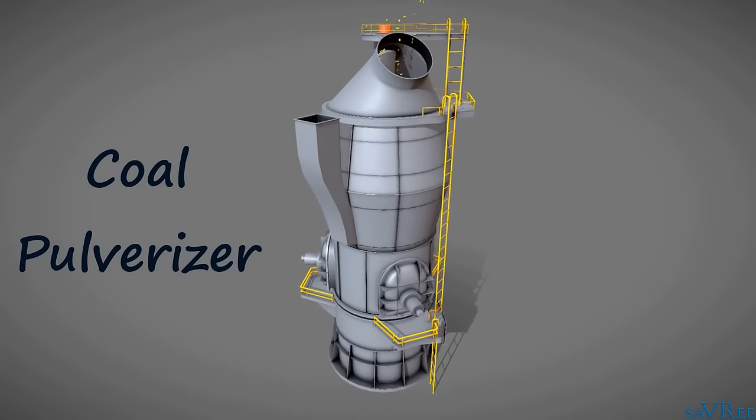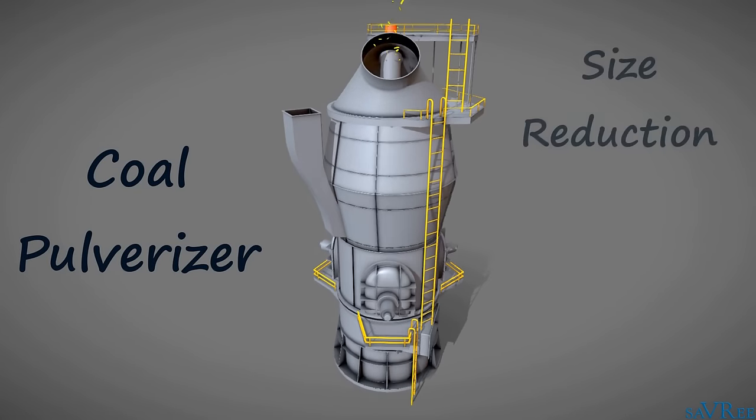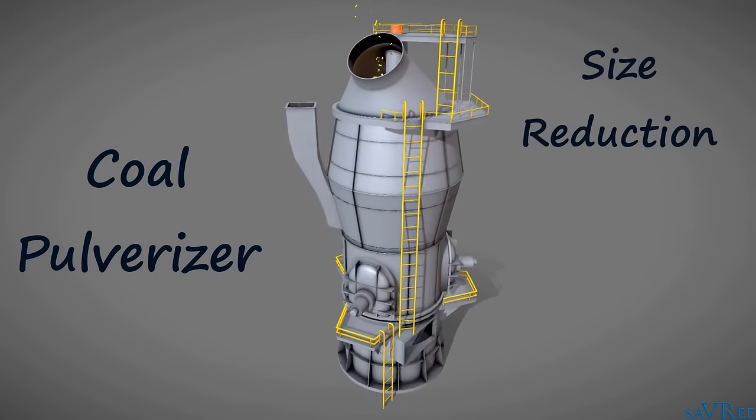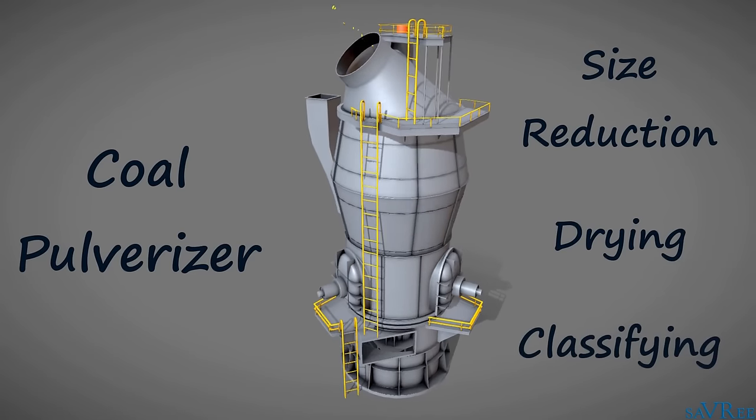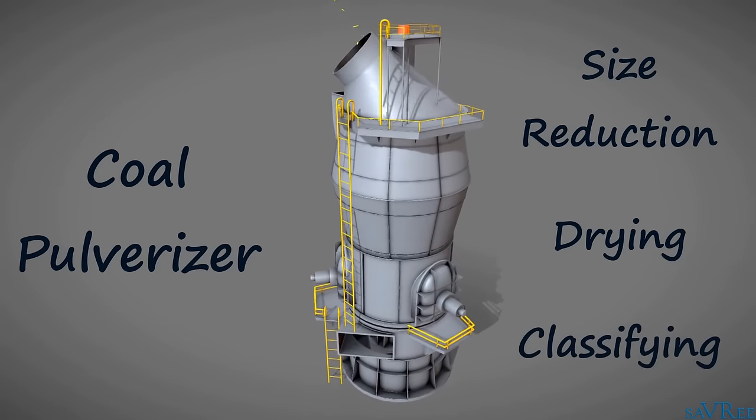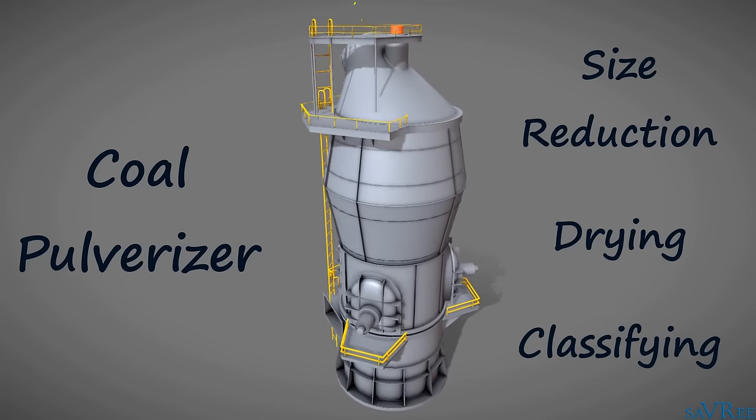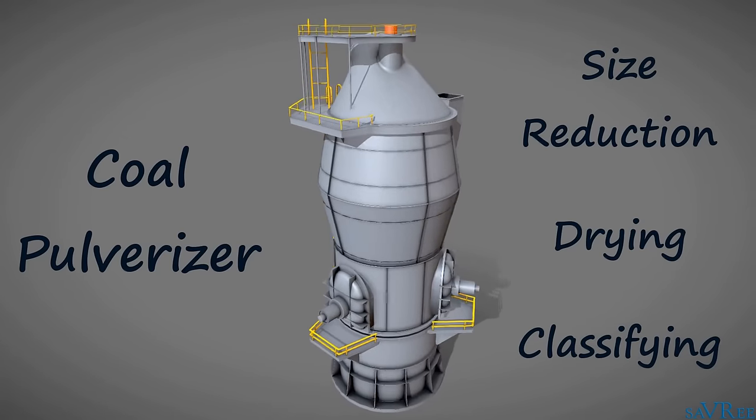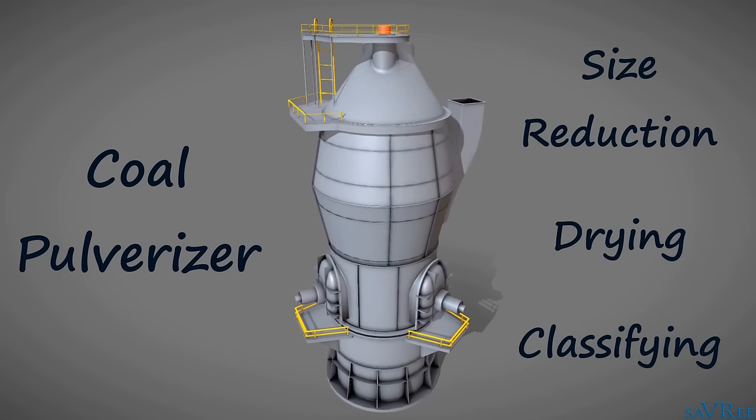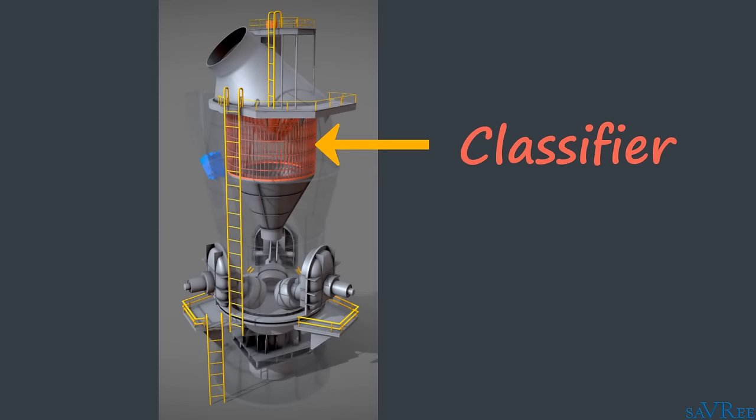When we pulverize coal, we're essentially reducing its size, drying it, and classifying it. Classifying means that we're sort of passing it through kind of a filter, you could say in a way, or a grate, and that ensures that the coal is the correct size when it gets to the boiler. We don't call it a filter or a grate, we call it a classifier, and usually it's a rotating object inside the coal pulverizer itself. If you want to learn more about coal pulverizers, then I will put the link in the video description area, because we've actually got a tutorial for that as well.